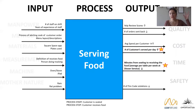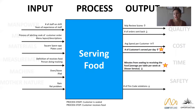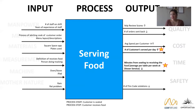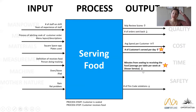For measurement, consider the definition of 'customer receives food.' Does that mean they received the bread? Dessert? One person's entree? Or everyone at the table's entree? That definition could cause people to record different times from seating to food receipt. Each person doing the tracking might have a slightly different understanding of when they start or stop, leading to inconsistent data.